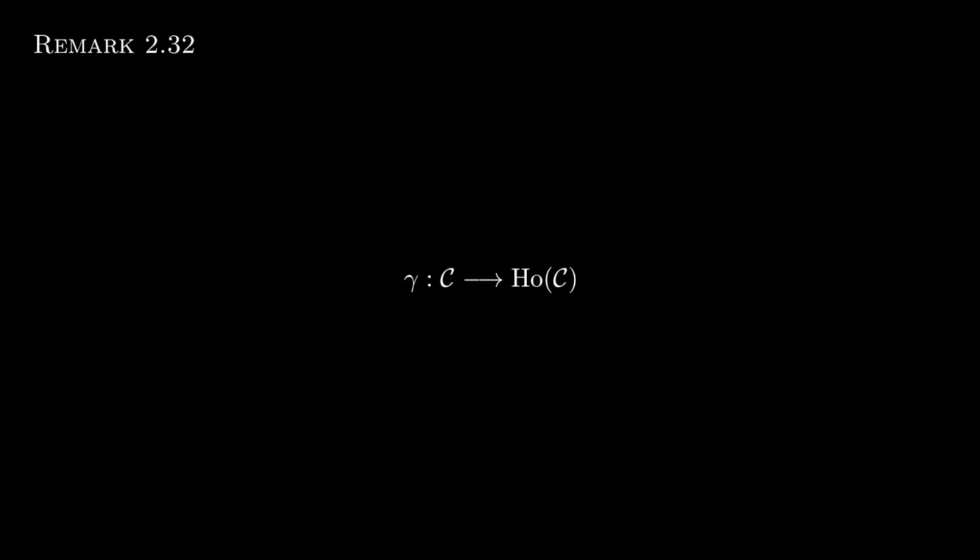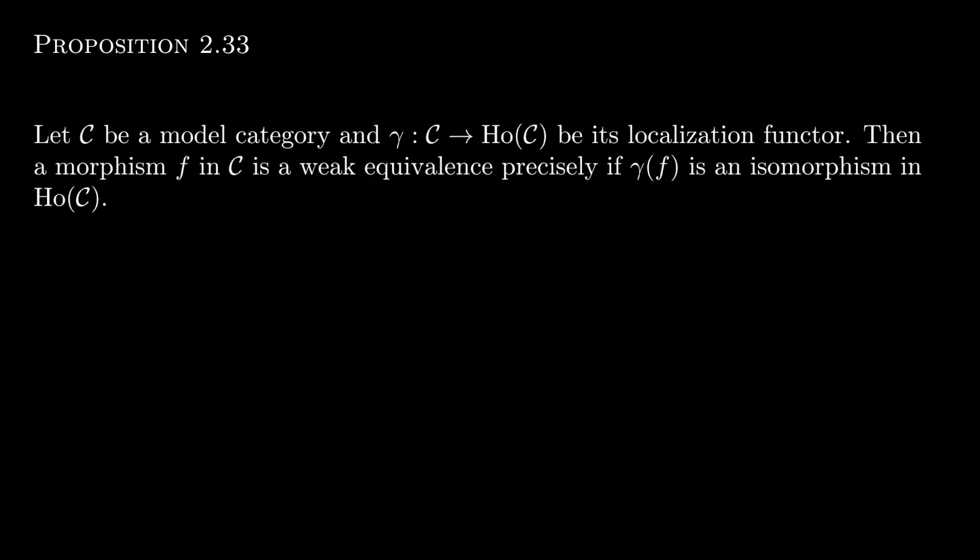If you've been paying attention, you might have noticed we never resolved that forming PQ was a choice and not canonical. But with what we have just shown, we know it doesn't really matter. We can speak of the functor gamma, which we call the localization functor, unique up to isomorphism. This is a cool result of the model category structure. In general, the localization of a category at its weak equivalences may force more morphisms than just weak equivalences to become isomorphisms.